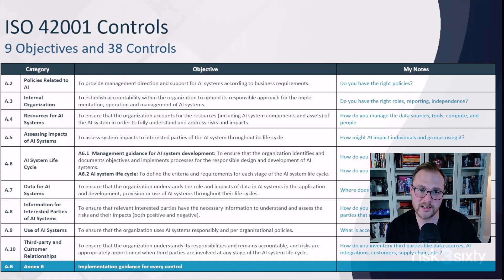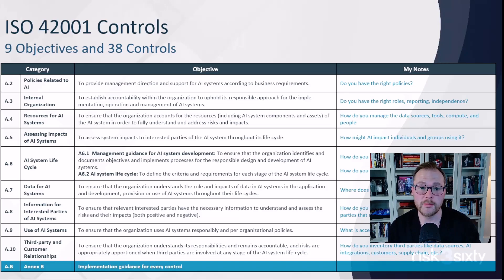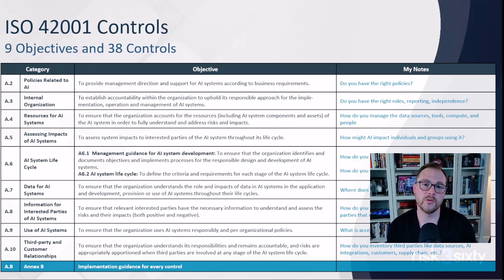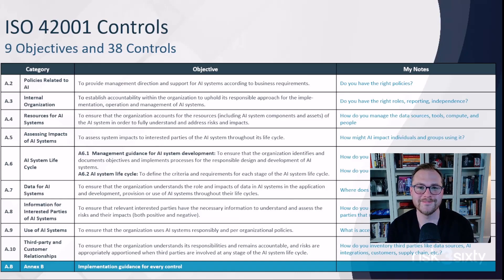From here, in the next couple of sessions, I want to pull out some of these core concepts and talk about them in more detail. In the very next session, we're going to talk about A2 — the policies related to AI — and walk through those 10 to 15 policies you might want to consider as an organization.